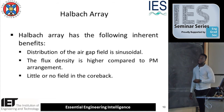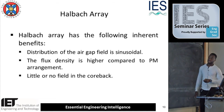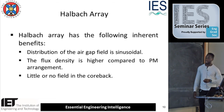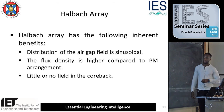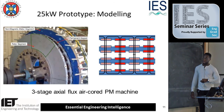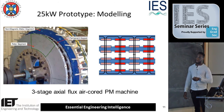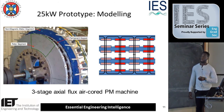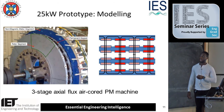Some of the key features of the Halbach array: the distribution of the air gap field is more sinusoidal compared to your conventional permanent magnet machine. The flux density is higher compared to a standard PM arrangement, so you should achieve a higher flux density. And there is little or no field in the back iron. In a conventional machine the distribution of flux density goes straight through all stages and across the back iron — that is what we consider the back iron fields, and this field would generate losses in that region.